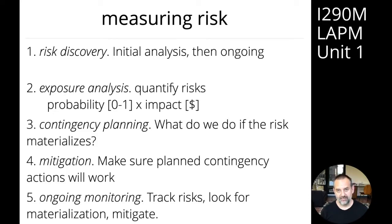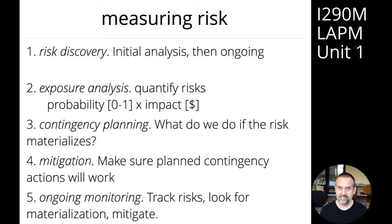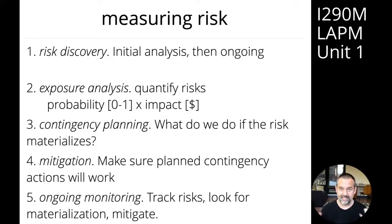You're not going to get that precisely right — you're going to have an estimate — but the crucial part is actually thinking about the assumptions that you make as you estimate the probability and the impact. For risks that we really care about, we'll go and validate those assumptions by running experiments, gathering data, and doing research. You don't need to get those numbers exactly right straight away; we're going to estimate them and then prioritize them.